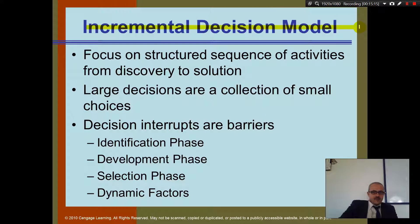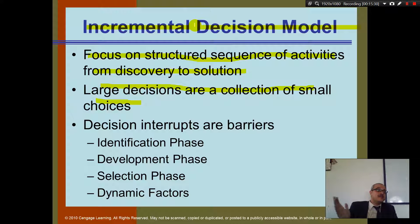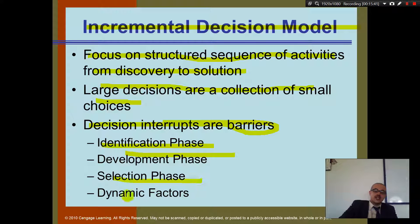The incremental decision model focuses on a structural sequence of activities from discovery to solution. Large decisions are treated as a collection of small decisions or choices — you take a big problem step by step. The model moves through an identification phase, a development phase, a selection phase, and dynamic factors, going through each step systematically.